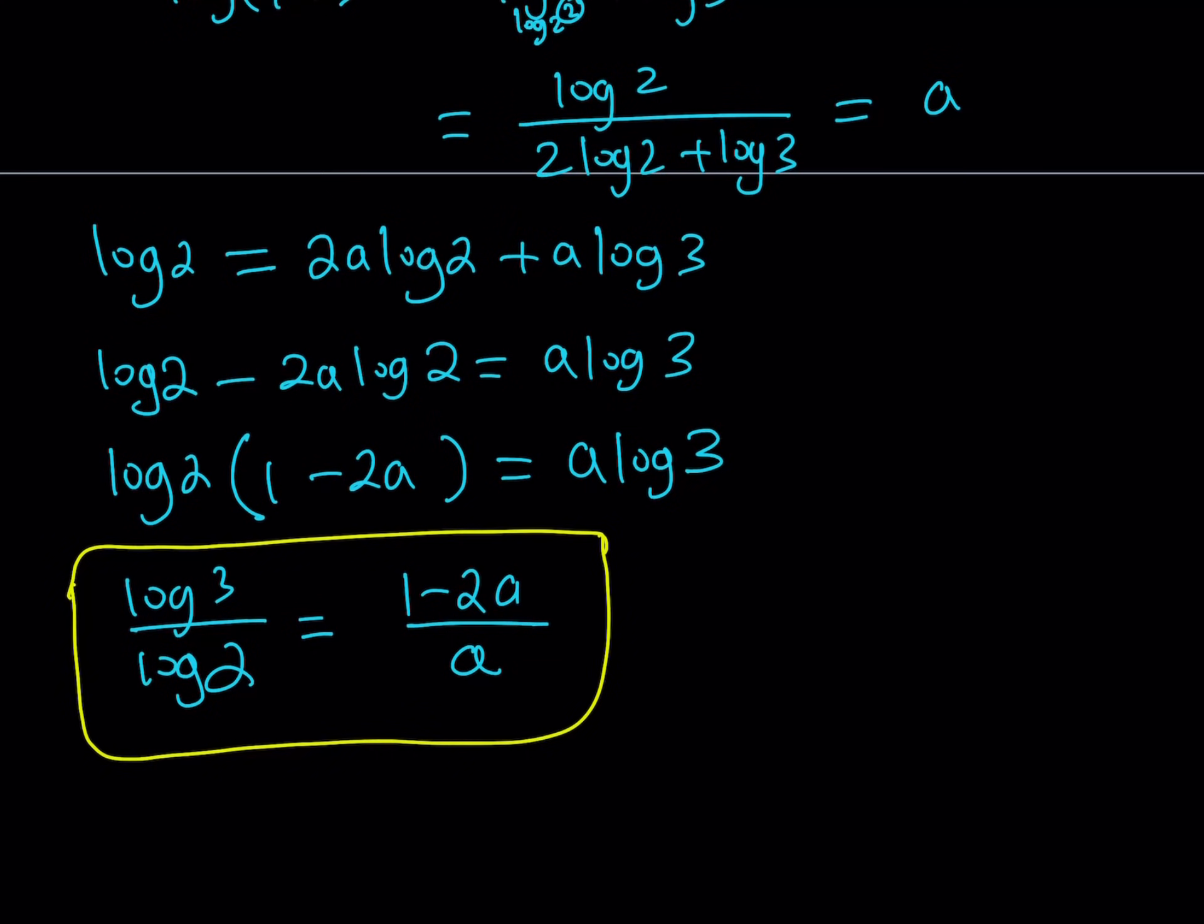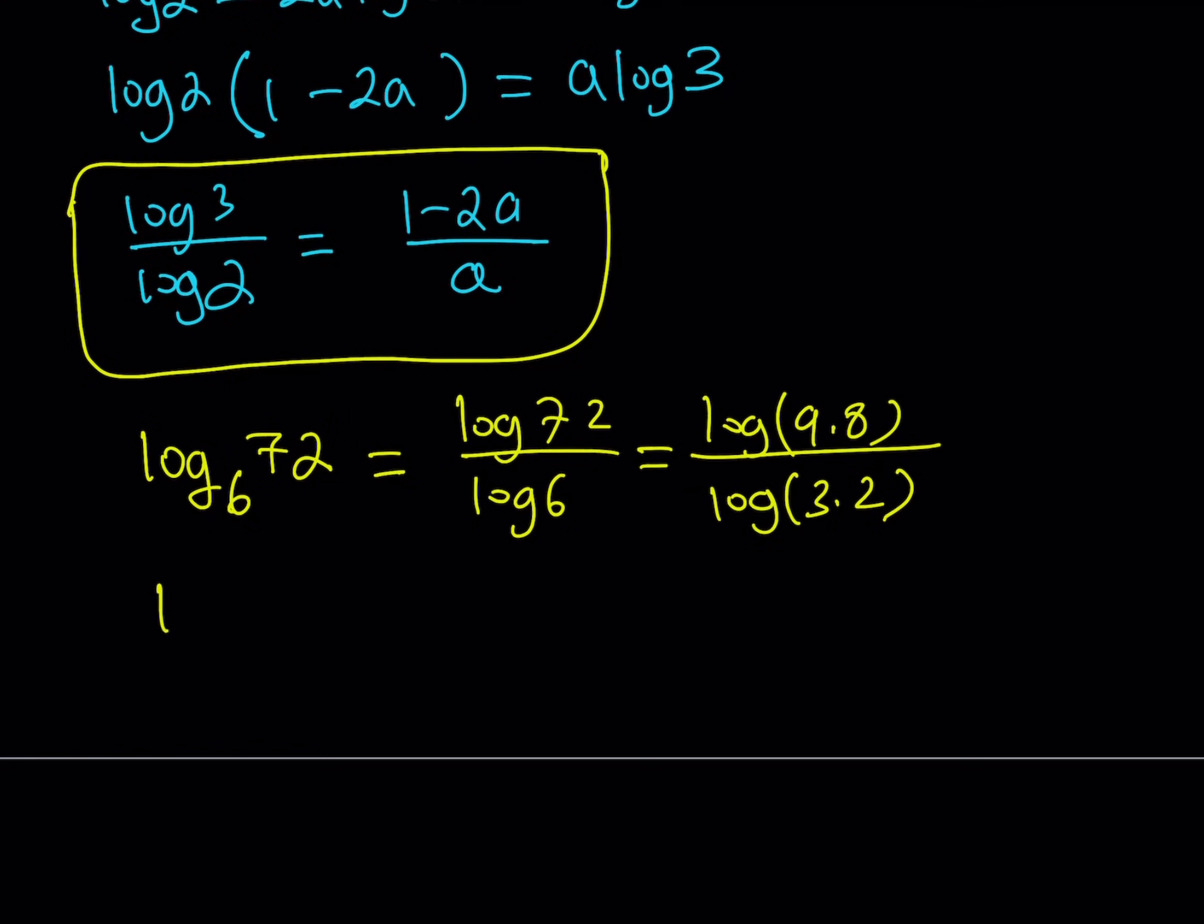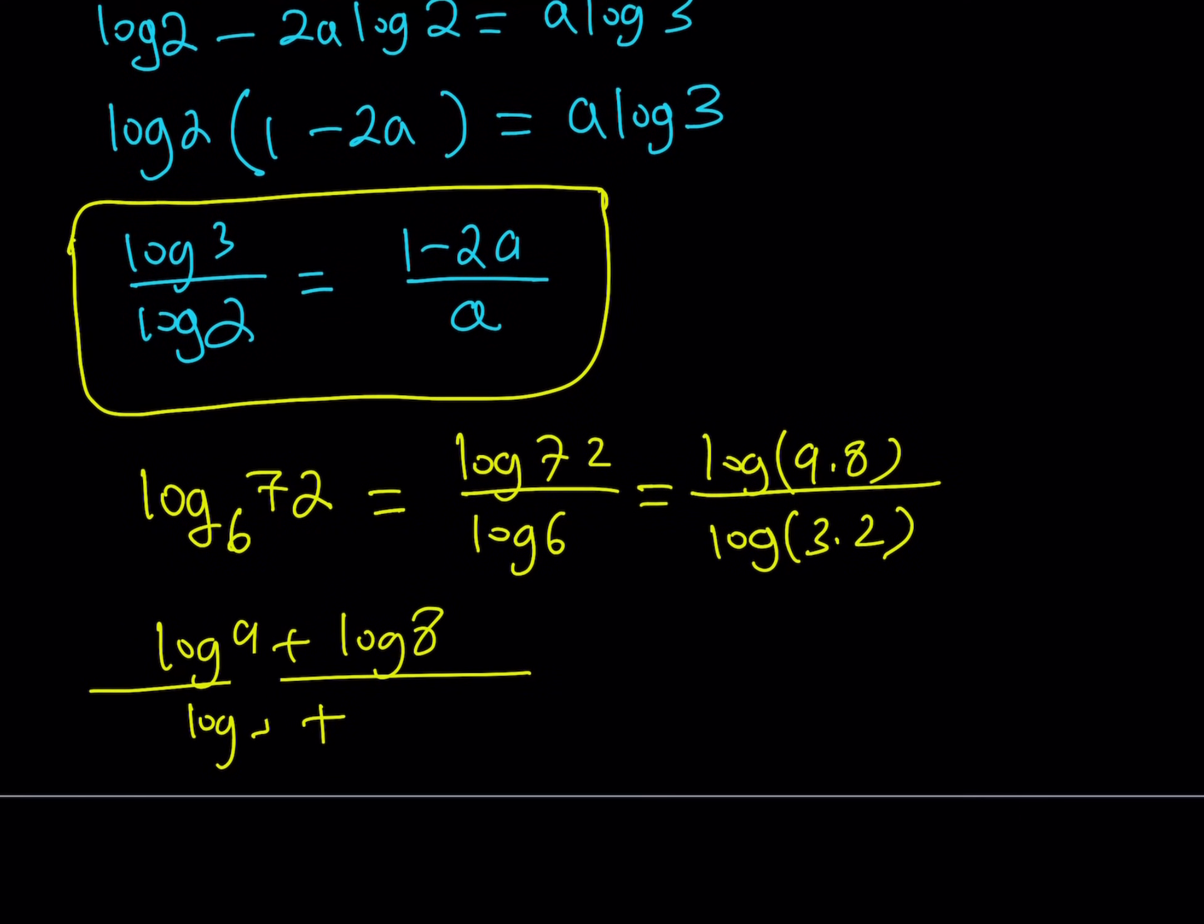So now if I can get the same part or expression in the given expression, which is the 72 with base 6, then I should be able to substitute. So I'm supposed to evaluate this expression in terms of A. But how can I break it down? Again, using change of base, I can write it as log 72 over log 6. And then separate it as log 9 times 8. Make sure that you are separating the different primes. And then you can write this as log 9 plus log 8 divided by log 3 plus log 2. And then log 9 is 3 squared, so it becomes 2 log 3. This is 2 cubed. And that becomes 3 log 2. And the bottom is good.